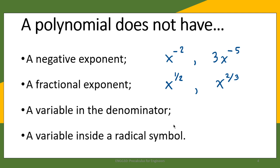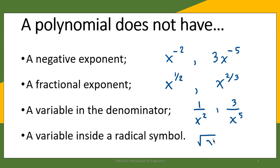Also, a given expression is not a polynomial if there is a variable in the denominator. This is equivalent to a negative exponent — the reciprocal of x raised to negative 2 becomes 1 over x squared. So if you see something like 3 over x cubed, that is not a polynomial.